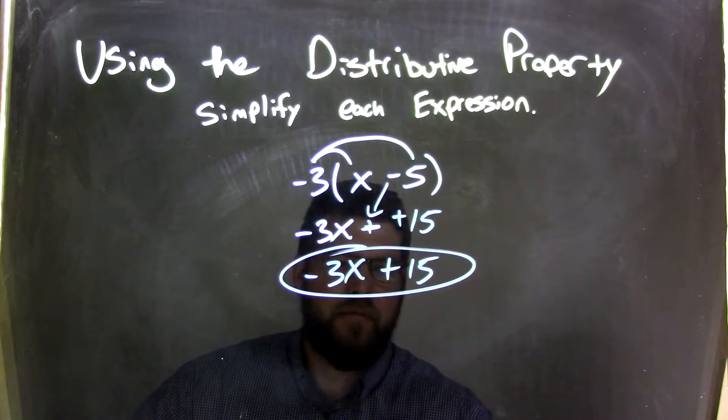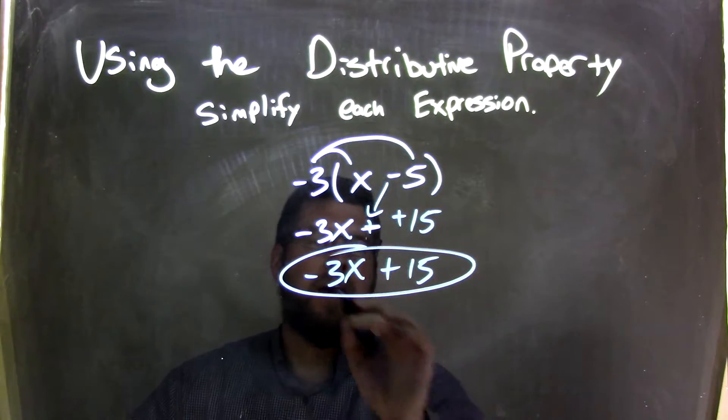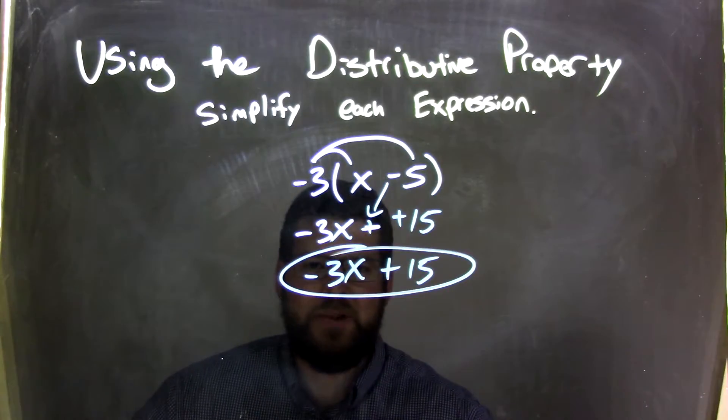So now we want to simplify and write it nicer as negative 3x plus 15, which is our final answer.